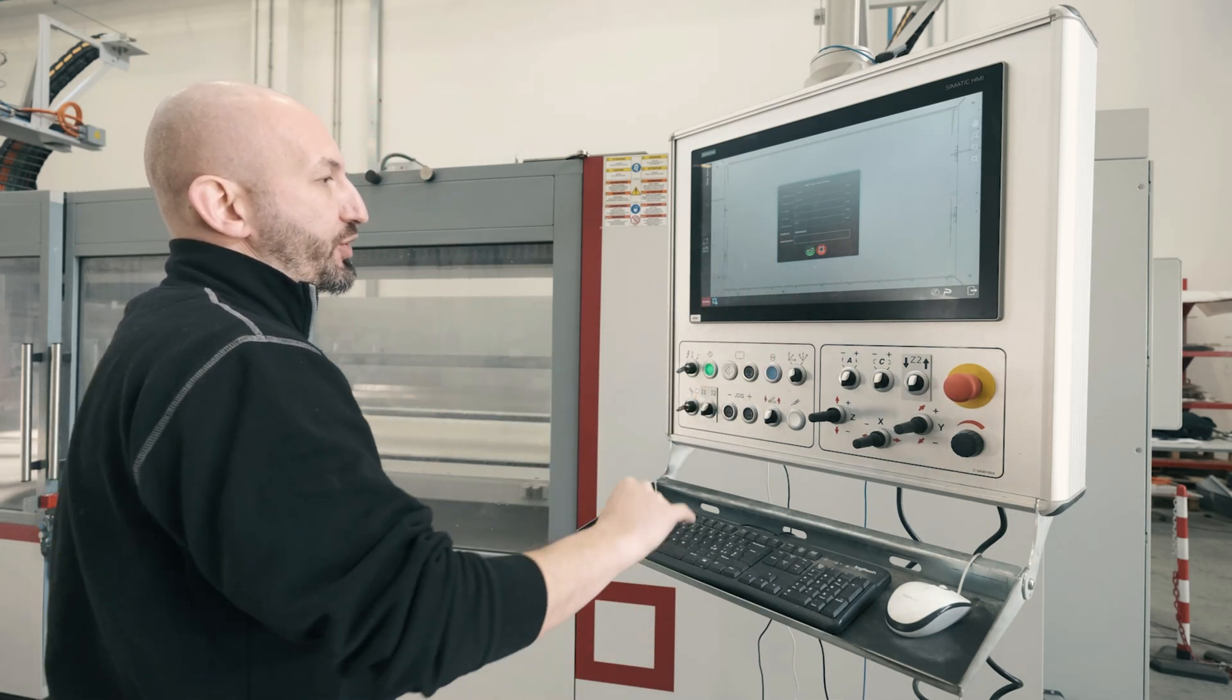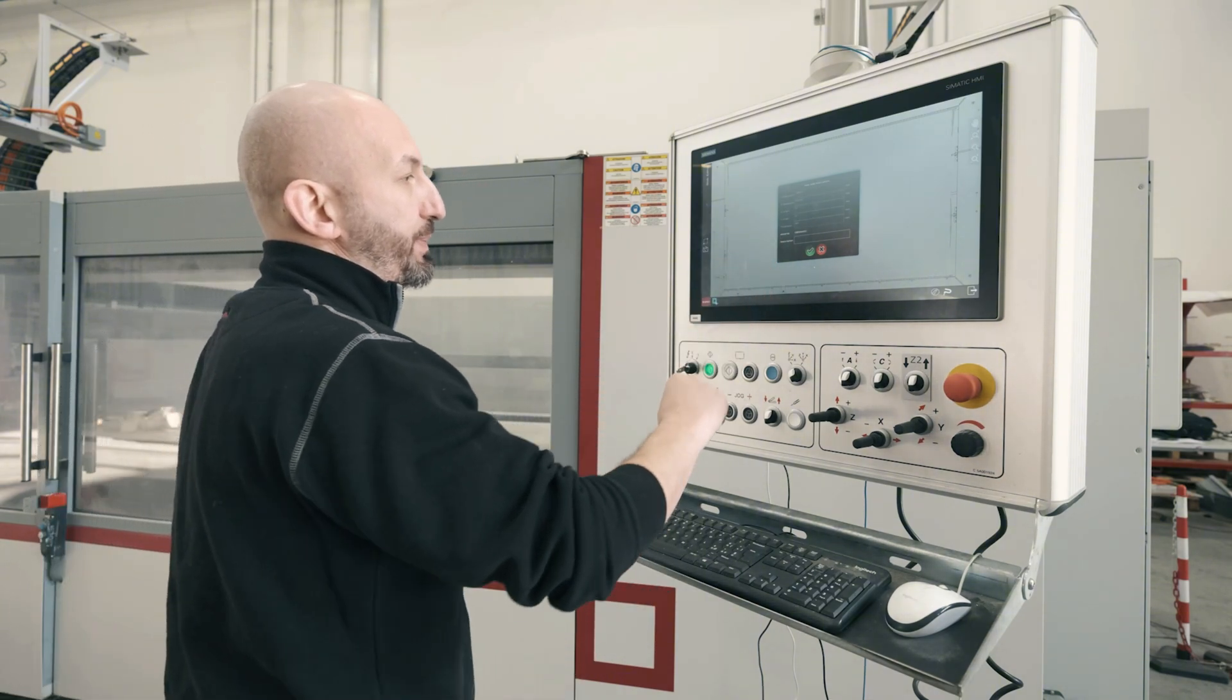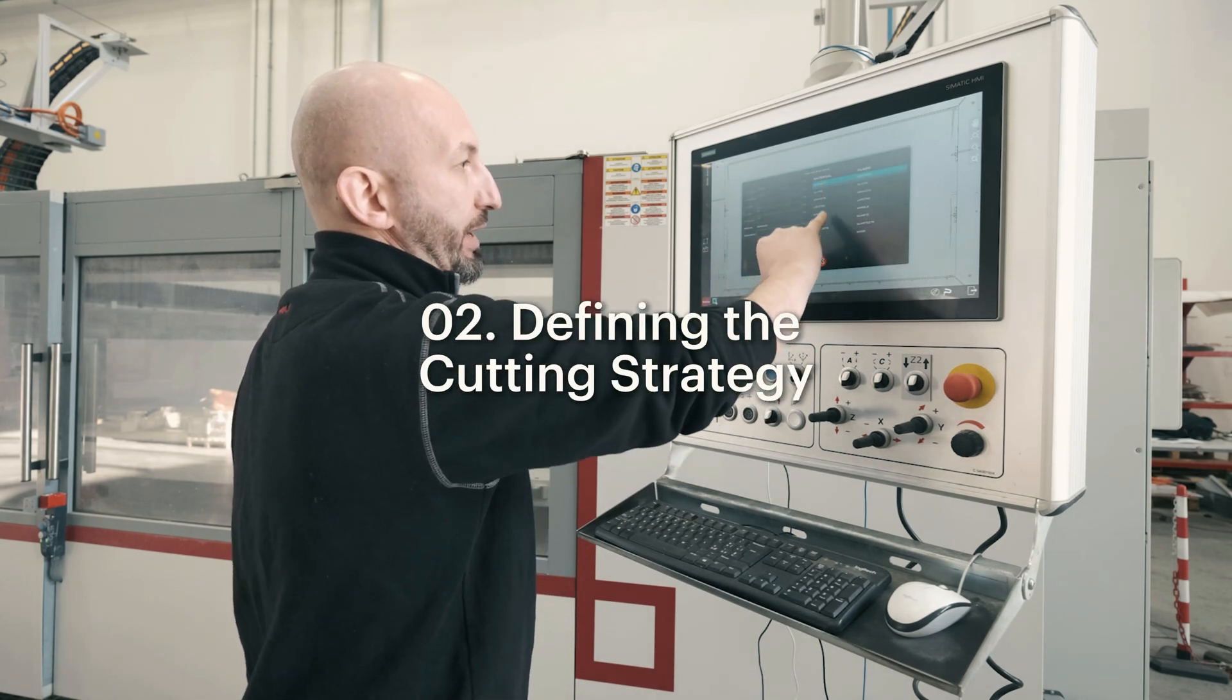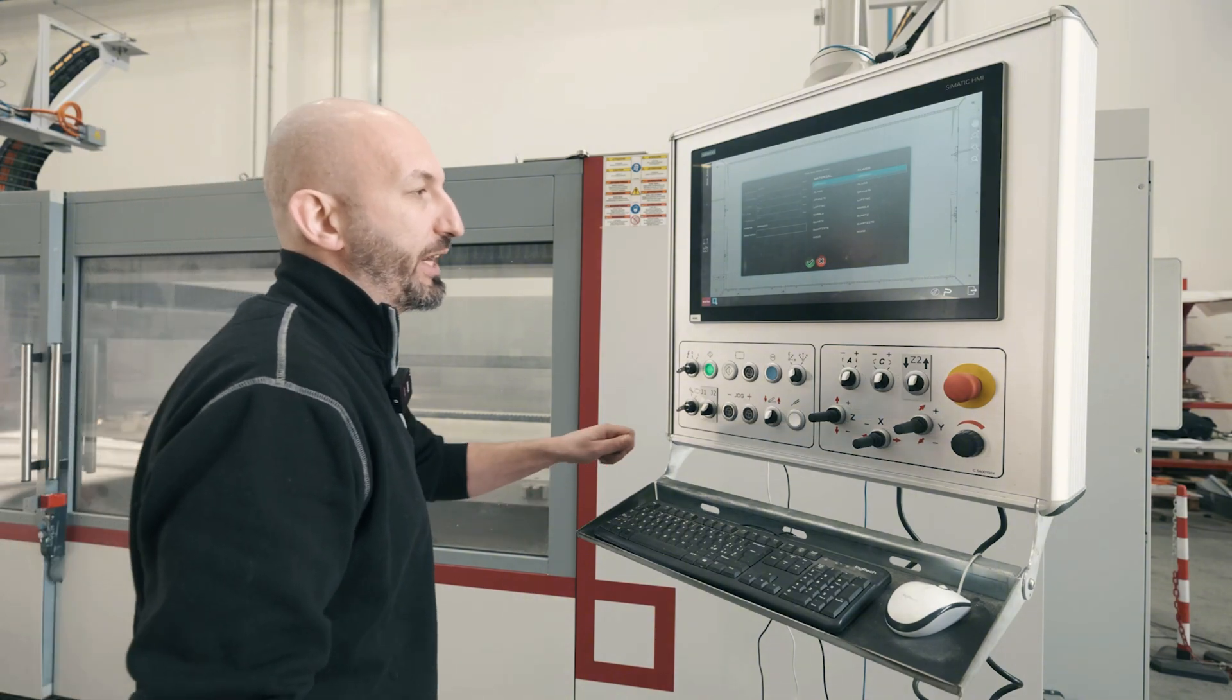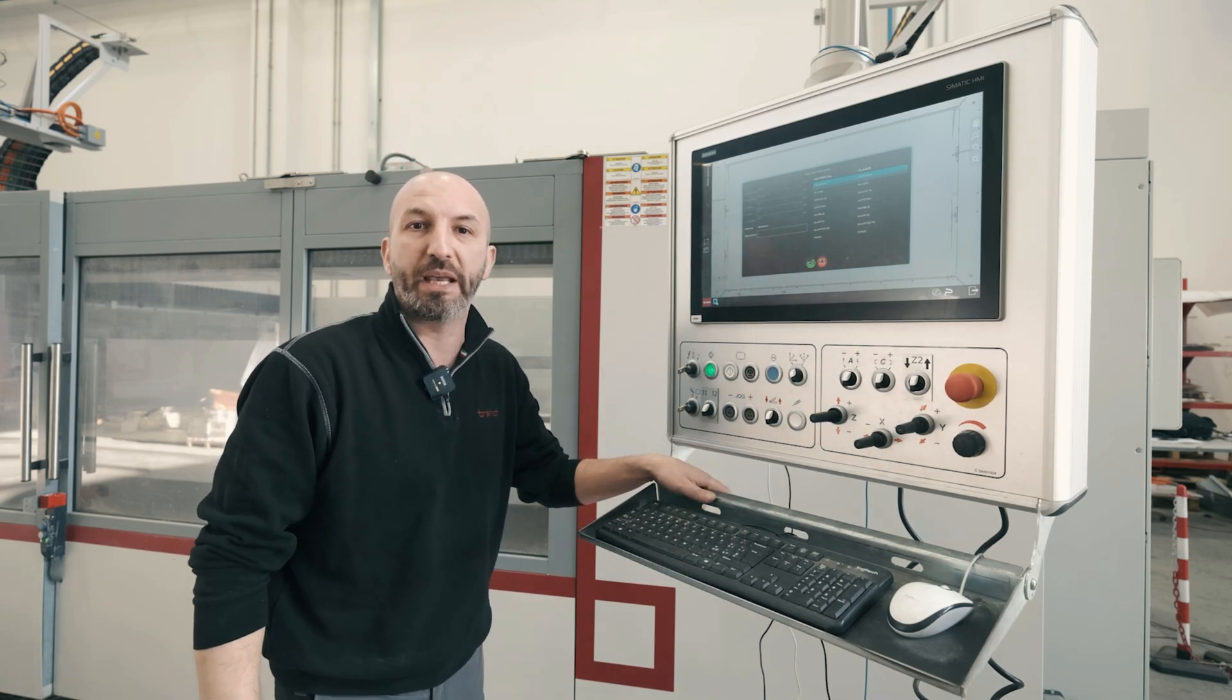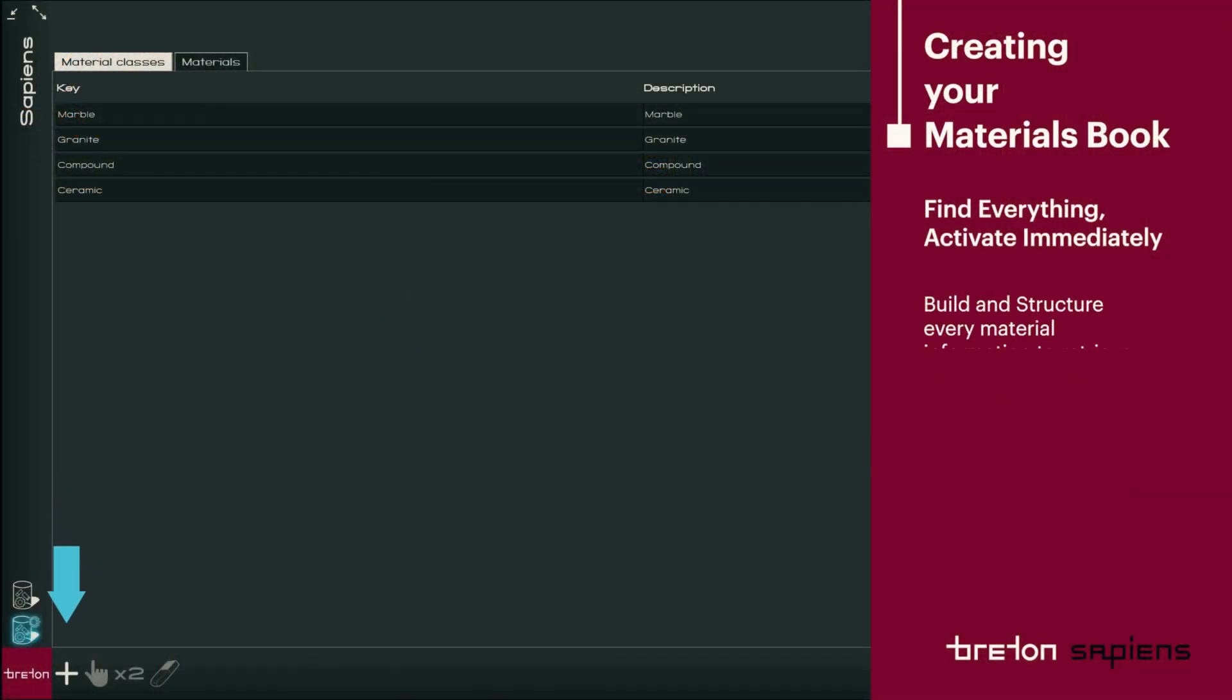All I have to do is selecting what material my slab is. This critical step is extremely simple, but also extremely important because simply by defining the material, the system will take all the necessary information to define what strategies through Sapiens we're going to use. Sapiens is our strategy manager.